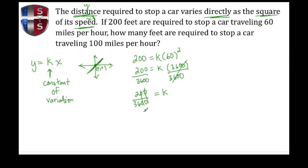Then we end up with 2 over 36 which can be simplified down to 1/18. So we found our constant of variation but we still haven't answered their question. Their question is how many feet are required to stop a car traveling at 100 miles per hour.